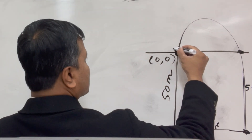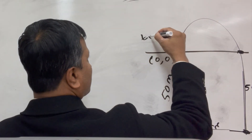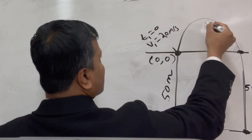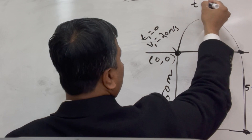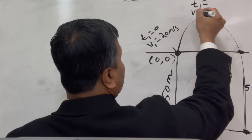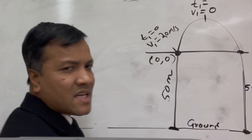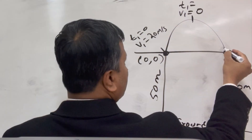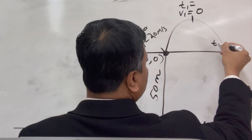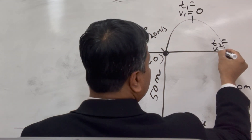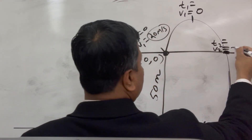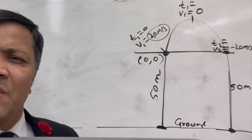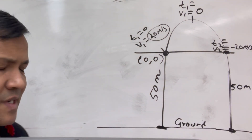T1 is 0. V1, the initial velocity I gave you, is 20 m/s upward. This is the max height; at max height, velocity is always 0, without any exception. This is T2 and V2. V2 I'm going to give you — V2 is −20 m/s. Why −20? Because it's equal in magnitude but opposite in direction to V1.